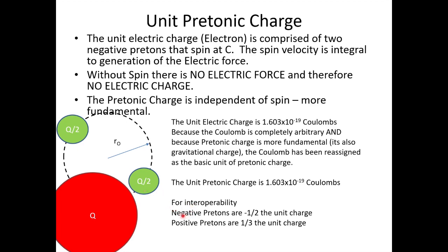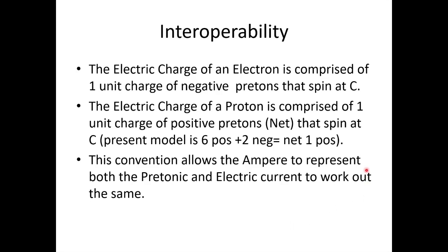For interoperability, negative pre-tons carry negative half the unit charge, and positive pre-tons carry one third the unit charge. The electric charge of an electron is comprised of one unit charge of negative pre-tons spinning at the speed of light. The electric charge of a proton is comprised of one unit charge net of positive pre-tons spinning at the speed of light. The present model for the proton is six positive pre-tons and two negative pre-tons for a net of one unit charge. This convention allows the ampere to represent both pre-tonic and electric current, making everything interoperable.